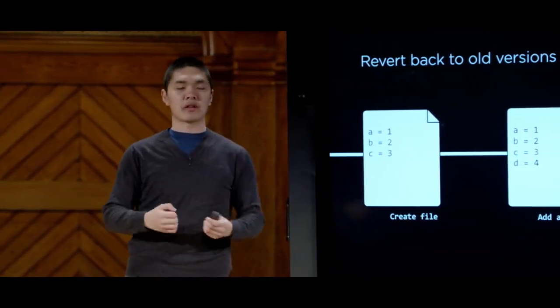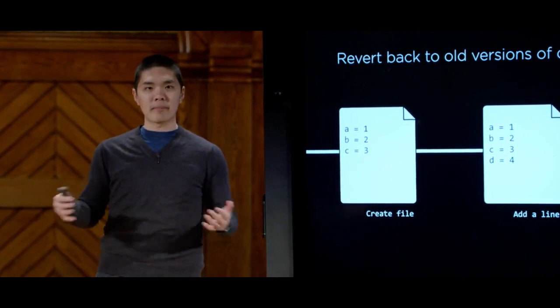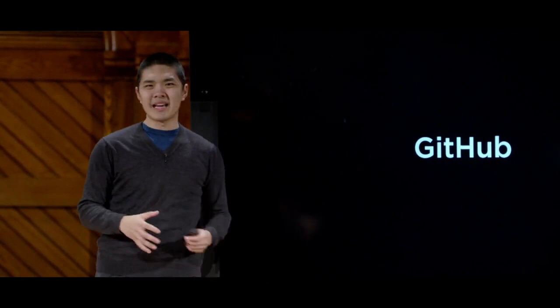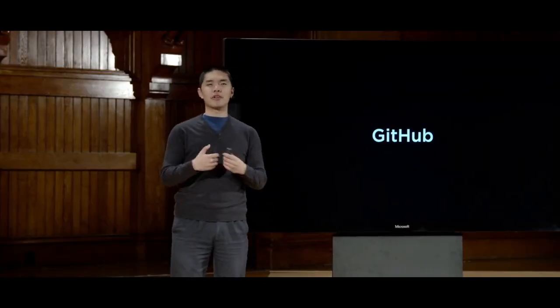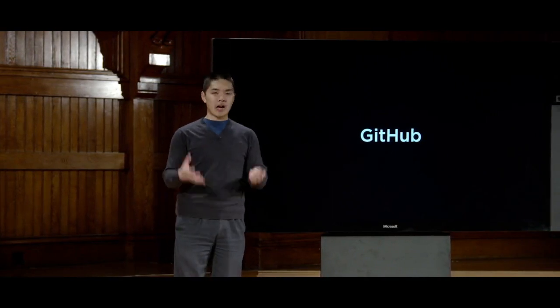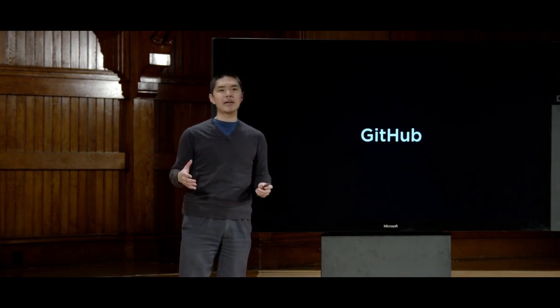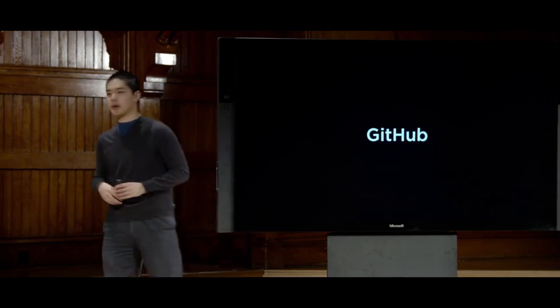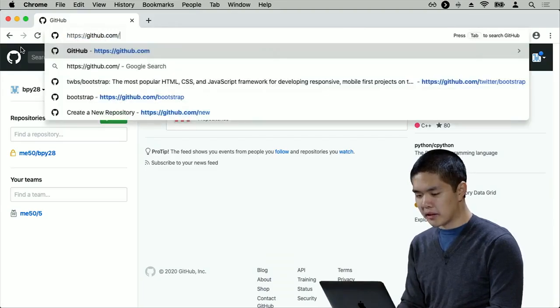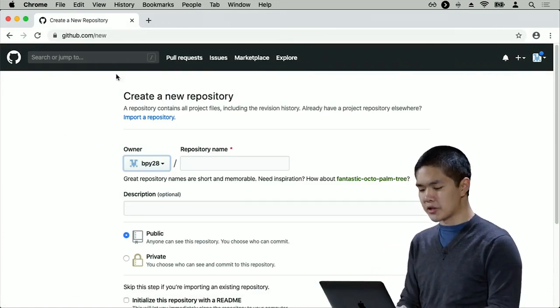Git projects need to be stored somewhere online so they can be downloaded from anywhere and shared with collaborators. There are a number of websites that can host Git code, but one of the most popular is GitHub. GitHub stores Git repositories — essentially folders that hold all the code and files related to your project — and lets you manipulate those repositories from your own computer.